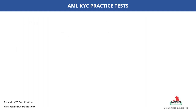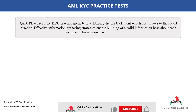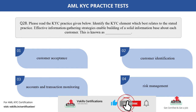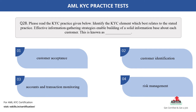Question number 28. Please read the KYC practice given below. Identify the KYC element which best relates to the stated practice. Effective information-gathering strategies enable building of a solid information base about each customer. This is known as dash. Fill in the blank. The options are: A. Customer acceptance; B. Customer identification; C. Accounts and transaction monitoring; D. Risk management. The correct answer is option B.